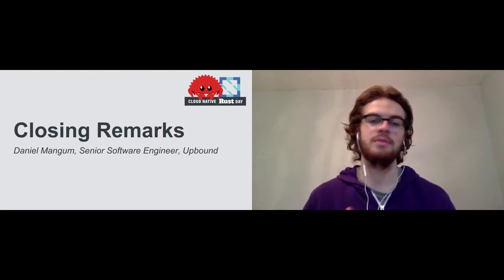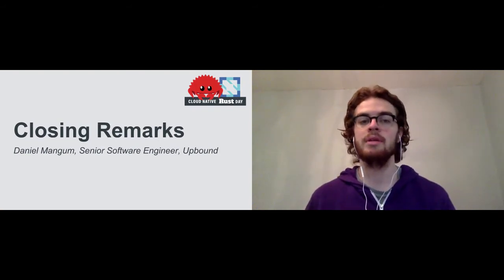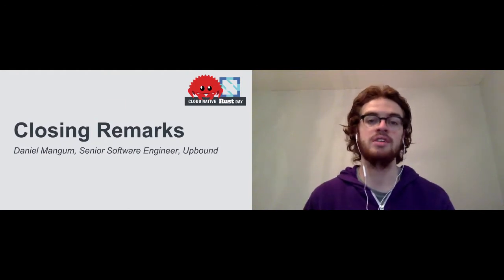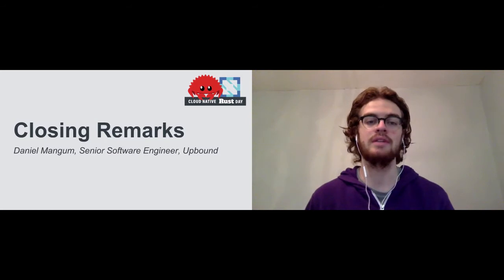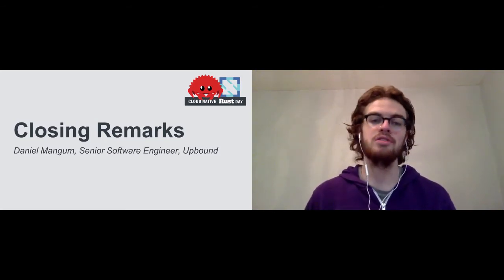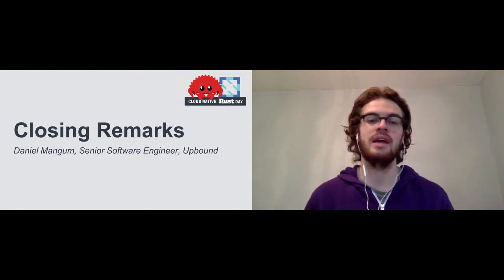Looking back at all the talks from today, I'm impressed by both the depth and breadth of use cases of Rust in Cloud Native projects. While many folks identify Rust as a great language for embedded systems and low-level programming, and this is certainly true, we also saw the usage of language features that enhance programmer productivity in situations where other languages have historically been used. Some of these include usage of macros to deduplicate boilerplate code, leveraging the borrow checker to eliminate race conditions, and utilizing generics and traits to produce powerful abstractions.